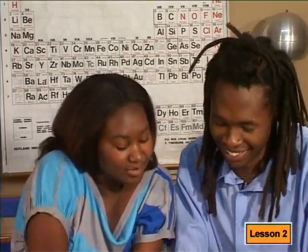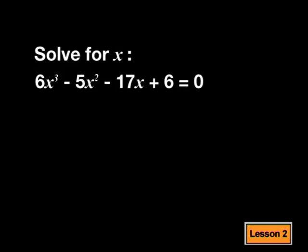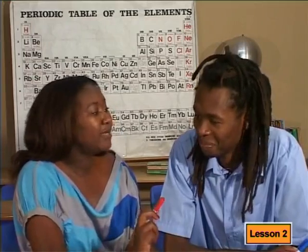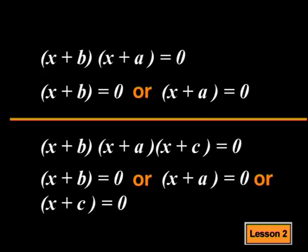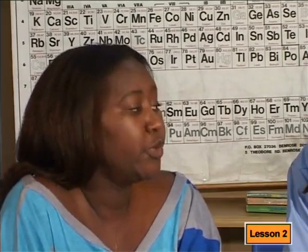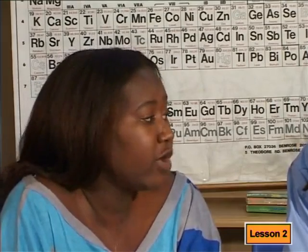This means that we need to find three solutions for x. Are you ready to get started? Let's start with this example: given 6x cubed minus 5x squared minus 17x plus 6 equal to 0, solve for x. We know from quadratic equations that if we have two factors multiplied together and equal to 0, then either factor could be equal to 0. It follows then that if we have three factors multiplied together which equal 0, then each of the factors could be equal to 0. So in a cubic equation, in order to solve for the unknown, we would first need to factorize and then solve for x, in the same way we do for quadratic equations.